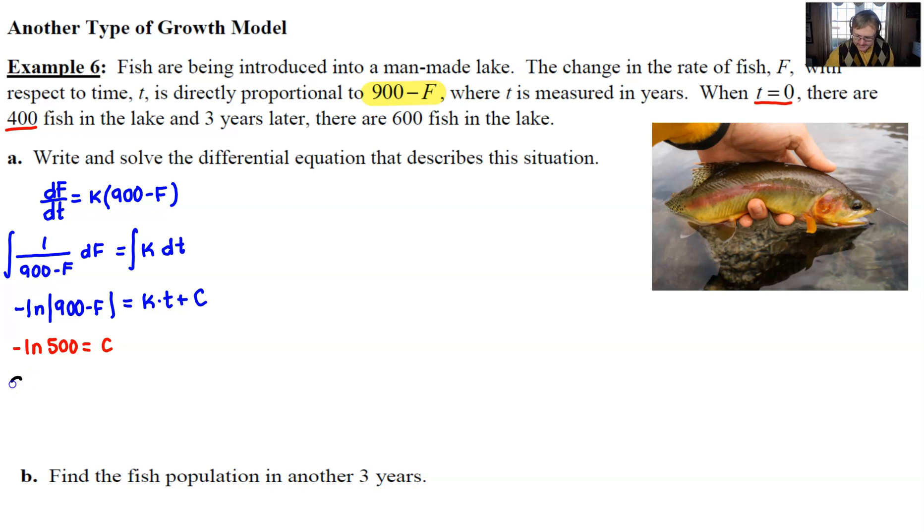So basically now we have a more getting there precise model. It still is a little bit lacking because we don't know the value of our k, but we'll find that next. So there's where we're at right now.